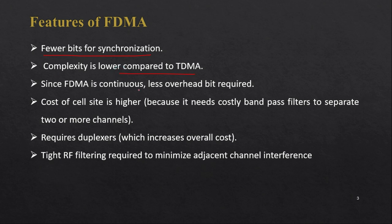FDMA requires fewer bits for synchronization and has lower complexity compared to TDMA. Because FDMA uses separate frequencies for uplink and downlink, transmission is continuous and therefore requires less overhead. However, the cost of the cell site is higher because it requires bandpass filters to filter out channels as well as a duplexer.